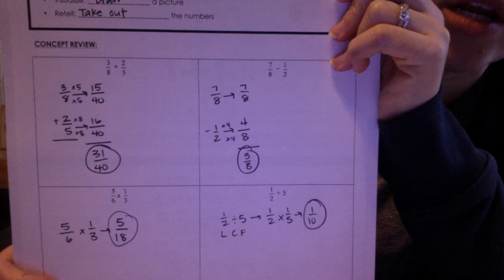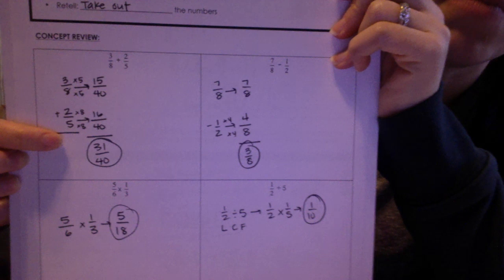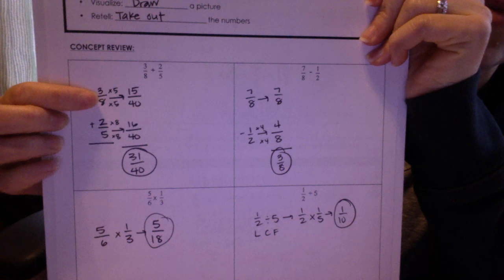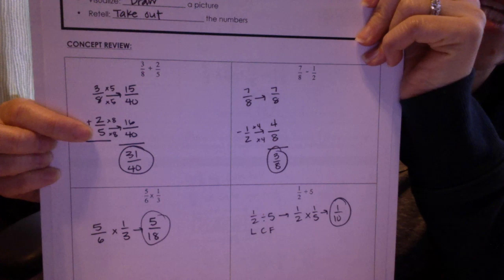So in the first one, 3 eighths plus 2 fifths, the common denominator is 40. Make sure that you are showing how you get to your new numbers. So instead of 3 eighths, we're going to multiply by 5 to get 15 40ths. Instead of 2 fifths, we're going to multiply by 8 to get to 16 40ths. So that when we add, we get 31 over 40.